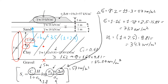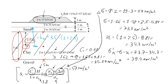Now let's find the effective stress at point A, the middle of the clay layer. It is total stress minus pore water pressure: 73.7 − 34.3 ≈ 39.4 kN/m². This is the initial effective stress that exists in the clay mass before we build the embankment.